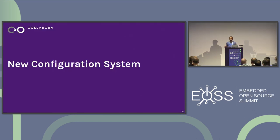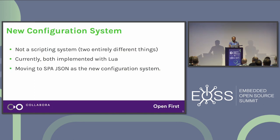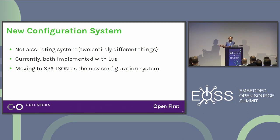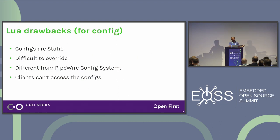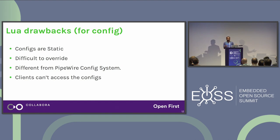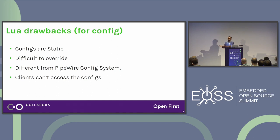WirePlumber 0.5 is the next major release, bringing in a new configuration system. We are only changing the configuration system — the scripting system remains Lua. We love Lua. But we were using Lua for config as well, which had drawbacks: configs are static and difficult to override. Also, PipeWire uses one configuration system and WirePlumber was using another — that's not good.